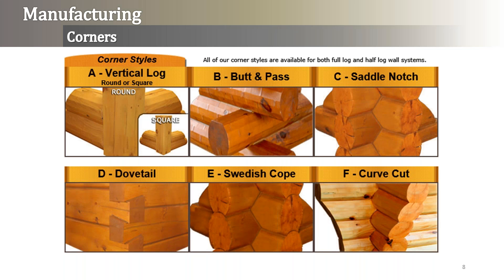Continuing along manufacturing, here are the corner styles, log sizes, and log shapes. You see a vertical corner, butt and pass, saddle notch, dovetail, Swedish cope, and a curve cut — the curve cut is a saddle notch with an extended length so that in the field we can cut a large Swedish or Norwegian type cut into the log, something traditional for Northern Europe. There are also round logs, double round logs, tongue and groove logs, 8x12 and different sizes. Full log and half log — no matter what, the corners would still come pre-notched from Golden Eagle so no cutting is needed on site.